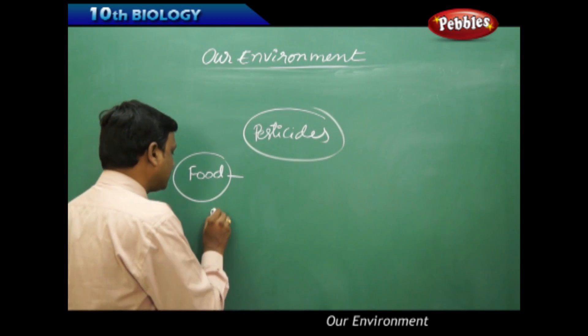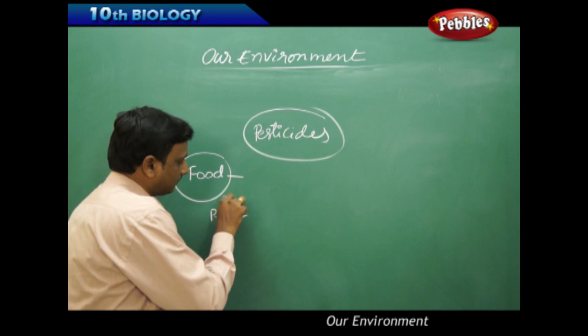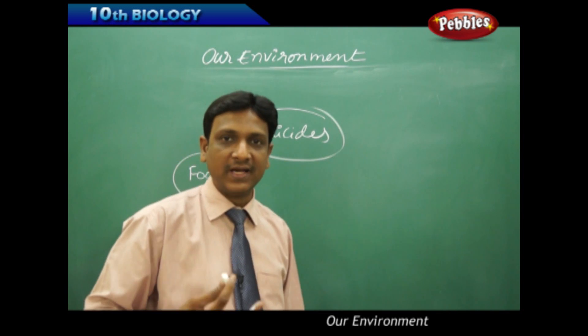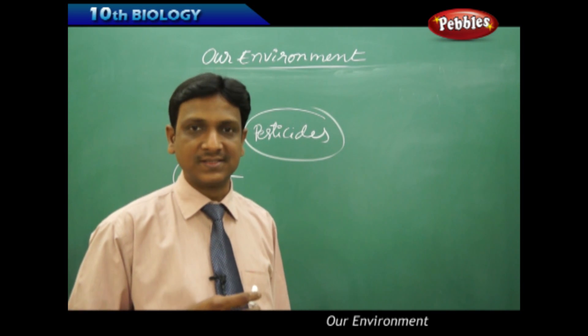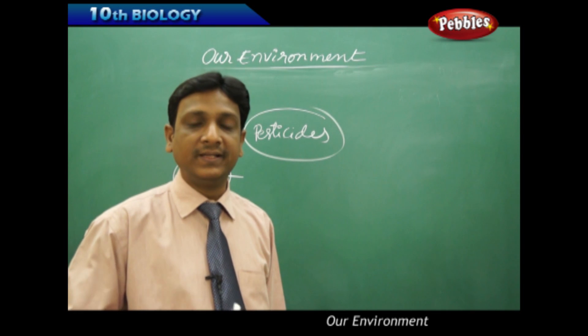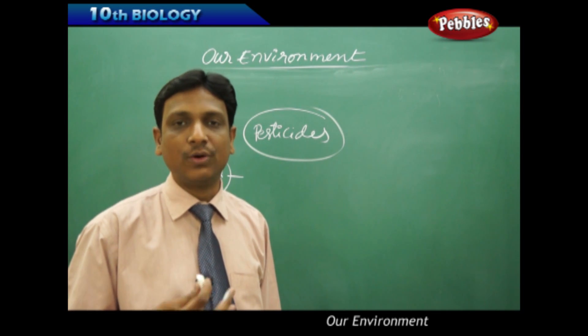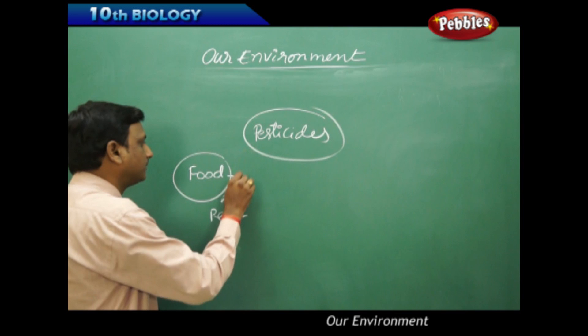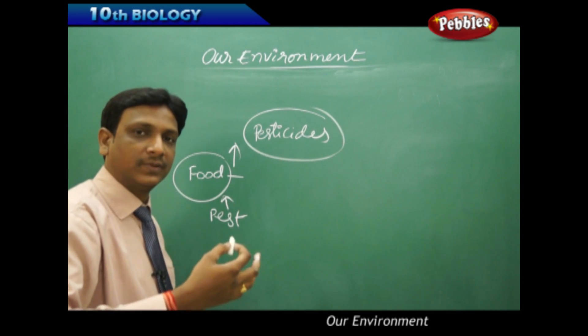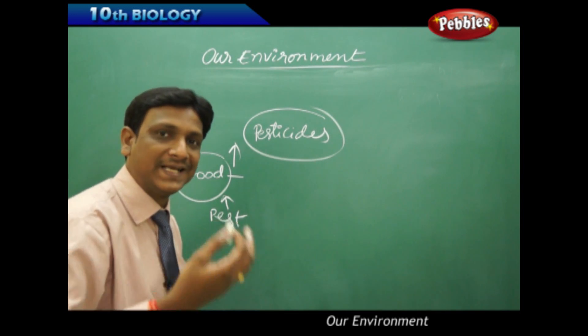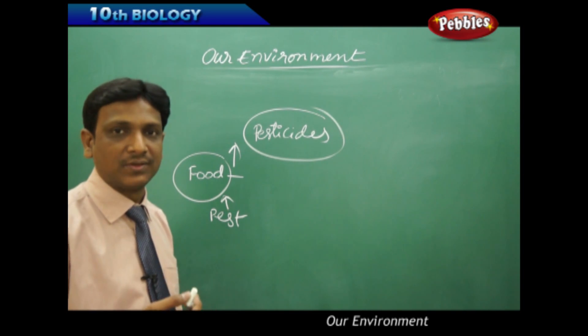The problem is pests. When large amounts of food are available, the number of pests also increases. They depend on the food, feed on it, and grow in number. As the quantity of food grown increases, the number of pests also increases.